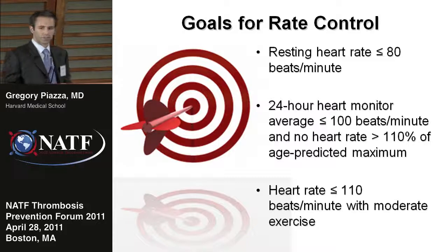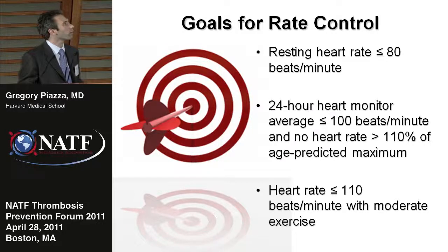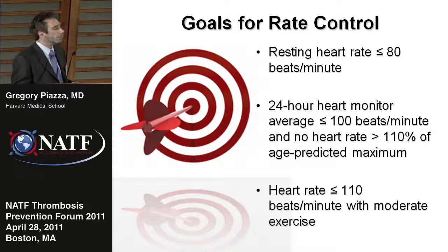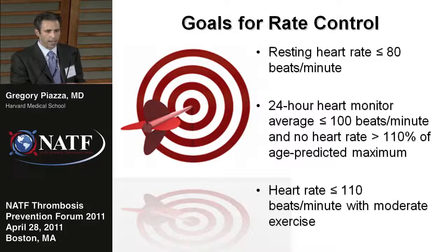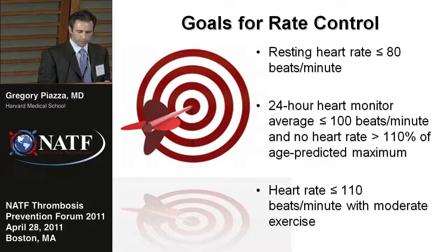If pursuing a rate control strategy, there are certain goals to strive for: a resting heart rate of less than or equal to 80 beats per minute, a 24-hour heart monitor average of less than or equal to 100 beats per minute with no heart rate greater than 110% of an age-predicted maximum, and a heart rate of less than 110 beats per minute with moderate exercise.